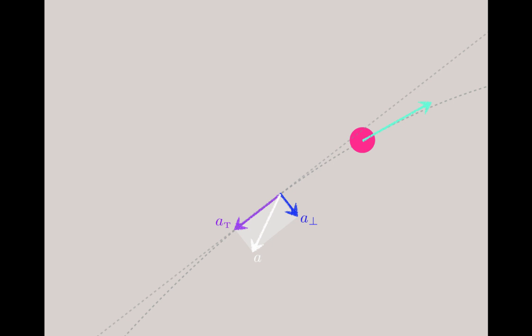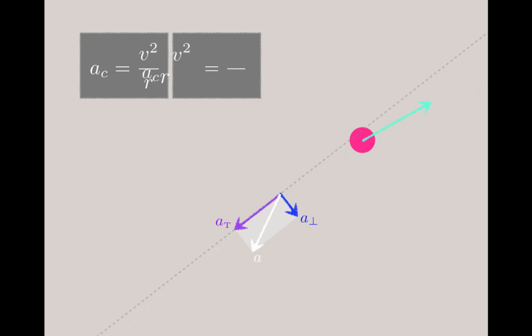However, it's possible to draw a circle that will approximate the path of this particle over a short distance. And going back to the equation for centripetal acceleration, you can just solve for r and make the appropriate substitutions to recover the radius of the circle that approximates the path at this particular point.